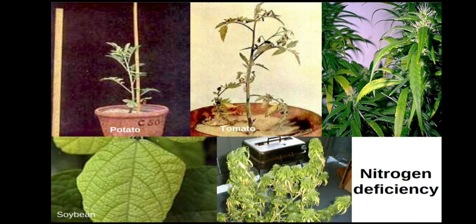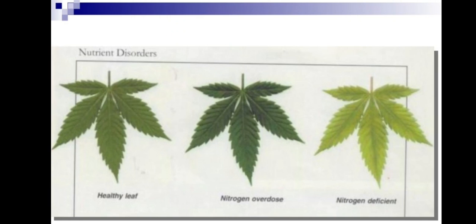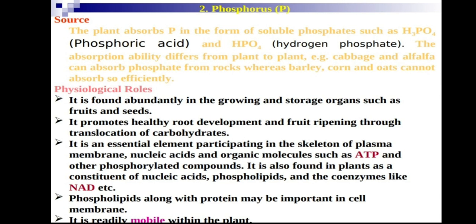Nitrogen deficiency can be identified easily in soybean by yellowing of leaves, and in cotton, groundnut, sunflower, sugarcane, bengal gram, and maize where lower leaves become yellowish. When comparing leaves visually: nitrogen overdose produces heavily dark green leaves, while nitrogen-deficient leaves are yellowish due to loss of chlorophyll.